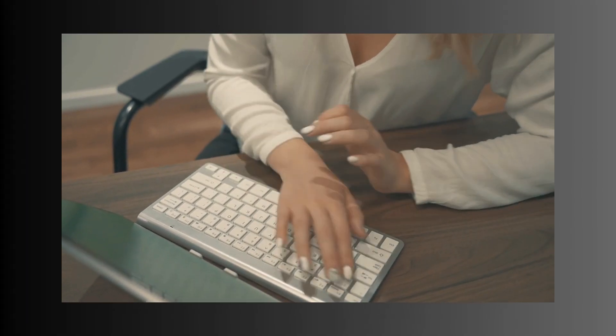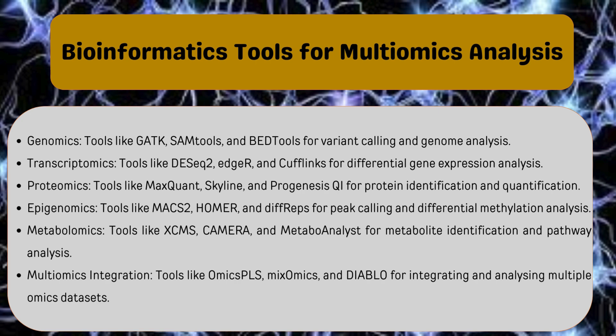Let's discuss the tools we use to make sense of Multiomics data. For genomics, tools like GATK, SAMtools, and BEDtools help look at DNA and find changes or variations. For transcriptomics, tools like DESeq2, HISAT2, and COFQUENSE help figure out which genes are turned on and off. For proteomics, MaxQuant, Skyline, and Progenesis QI are detective tools for finding and measuring proteins. For epigenomics, MACS2, HOMER, and DiffBind help understand how genes are regulated. For metabolomics, XCMS, CAMERA, and MetaboAnalyst identify and analyze the tiny molecules in your body.